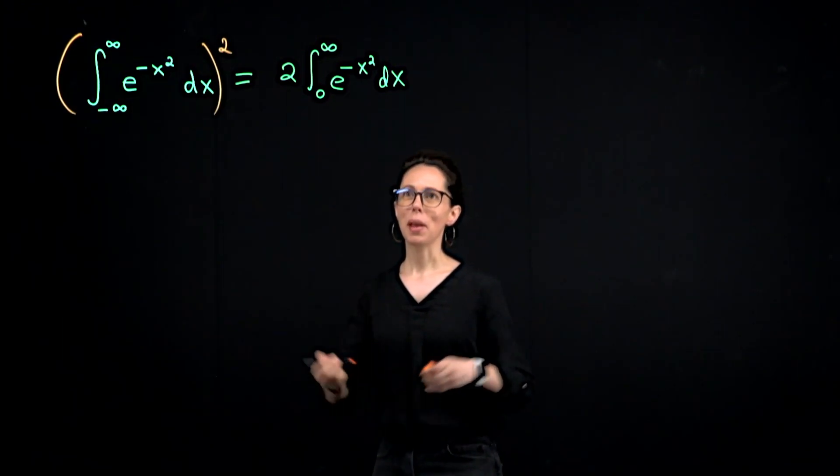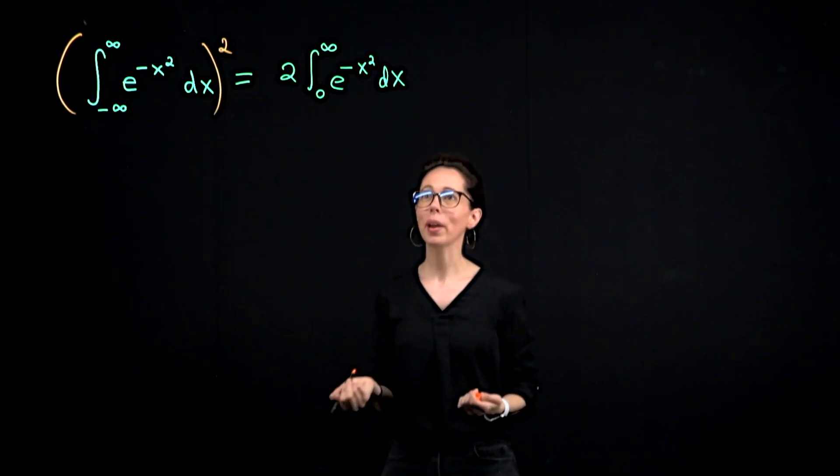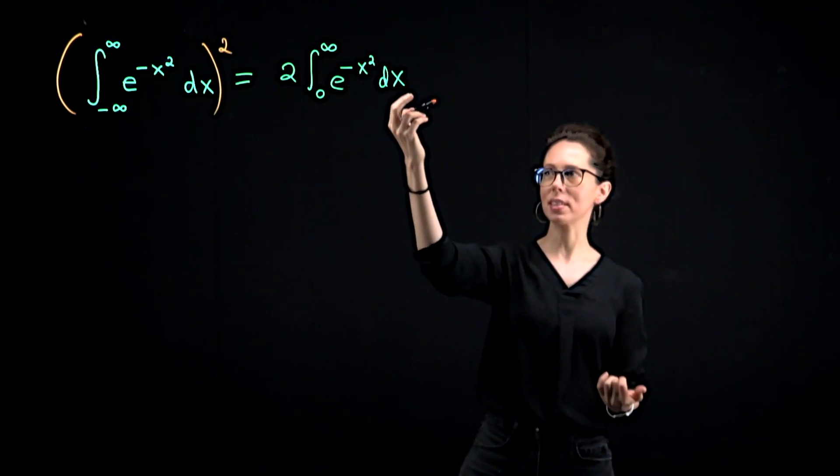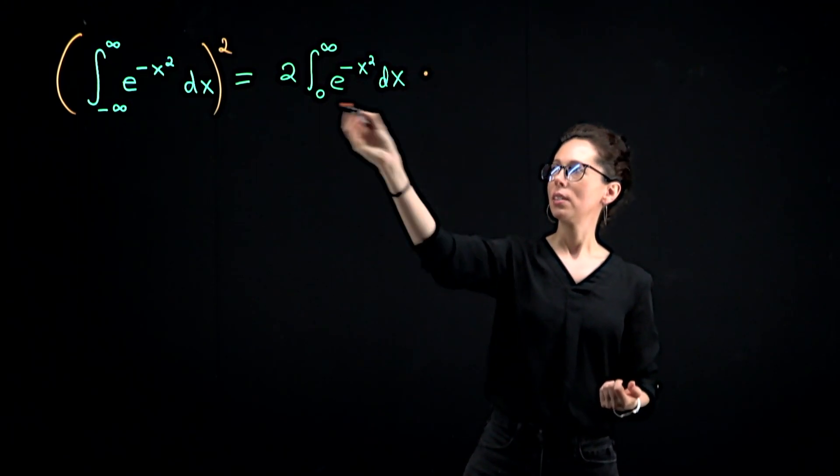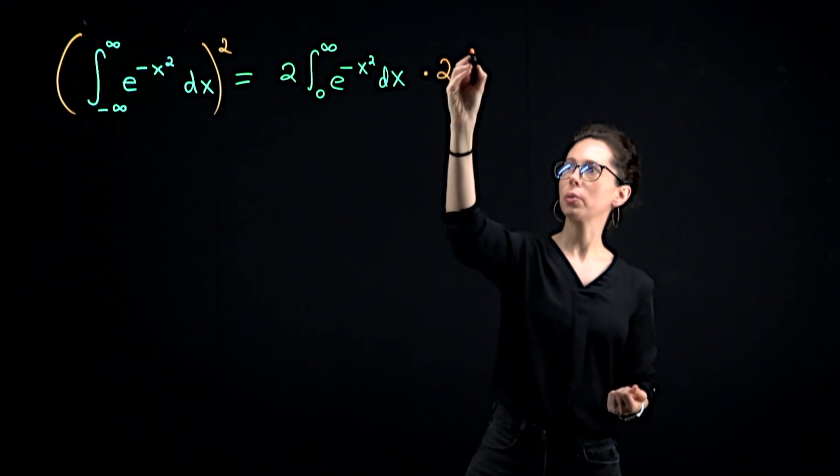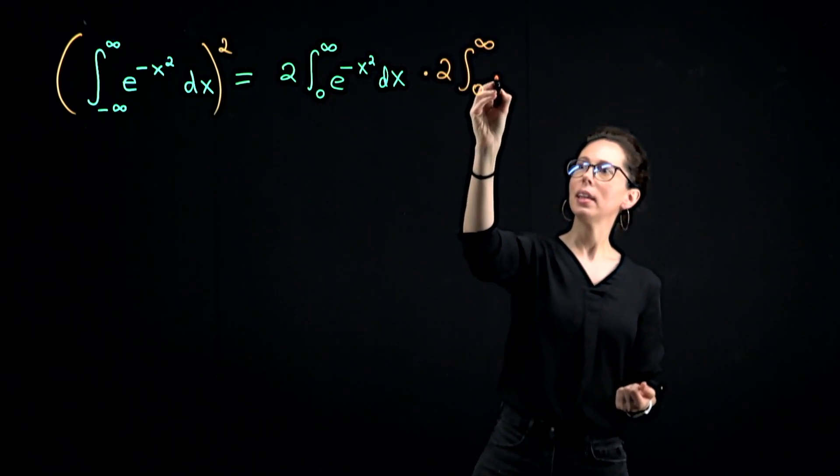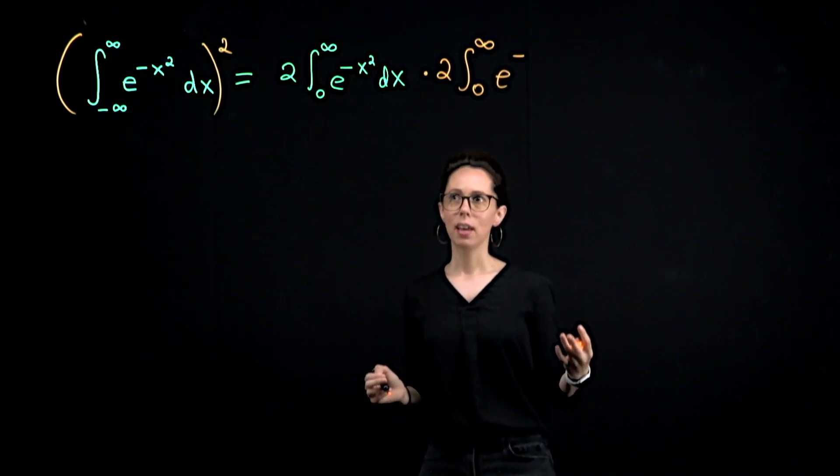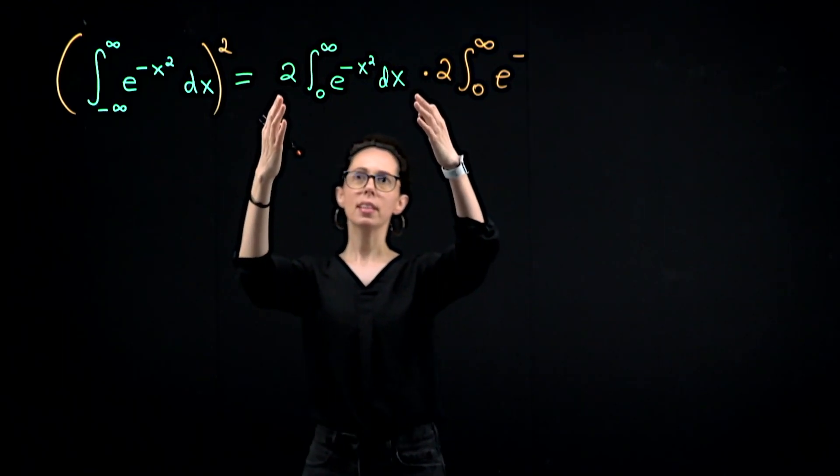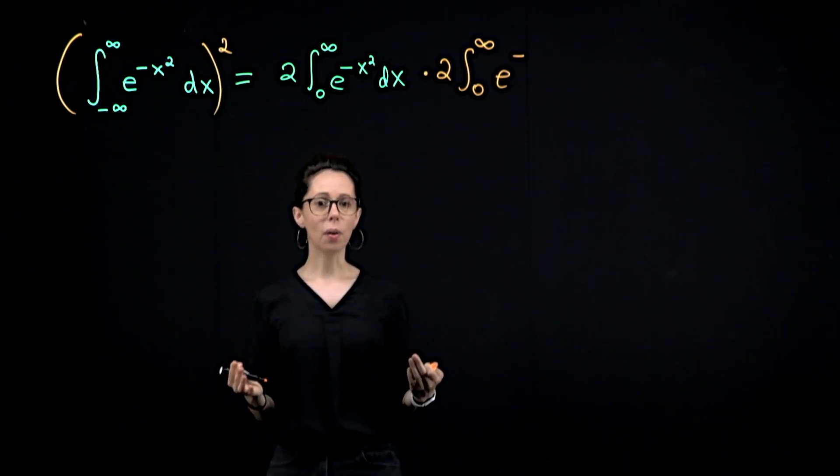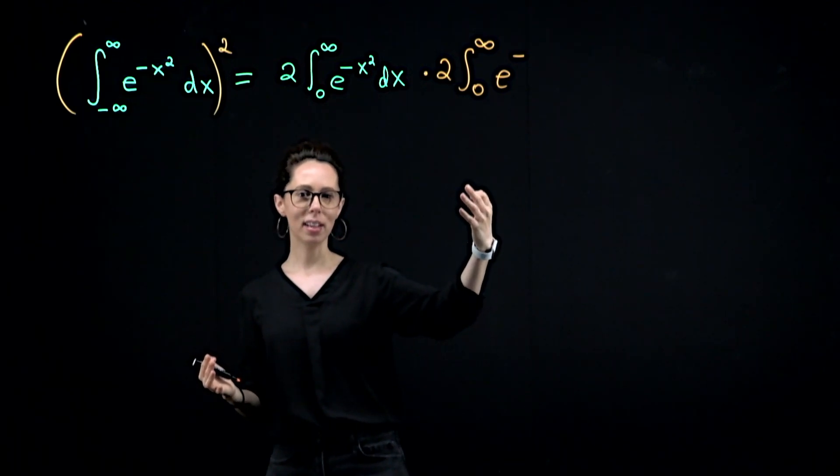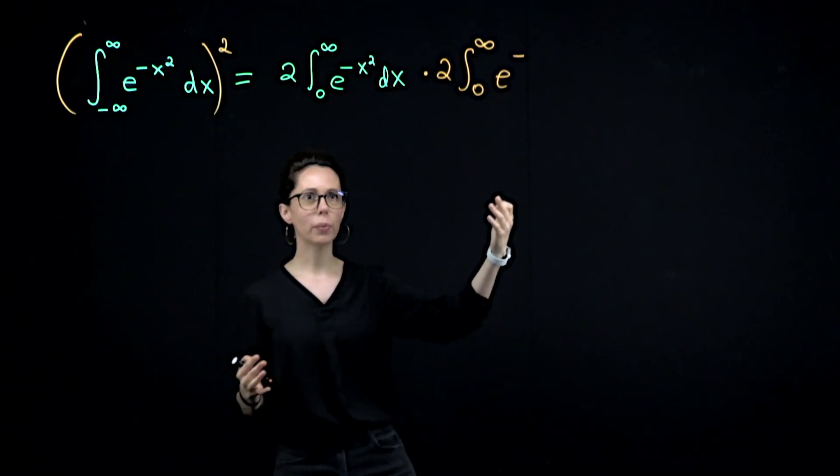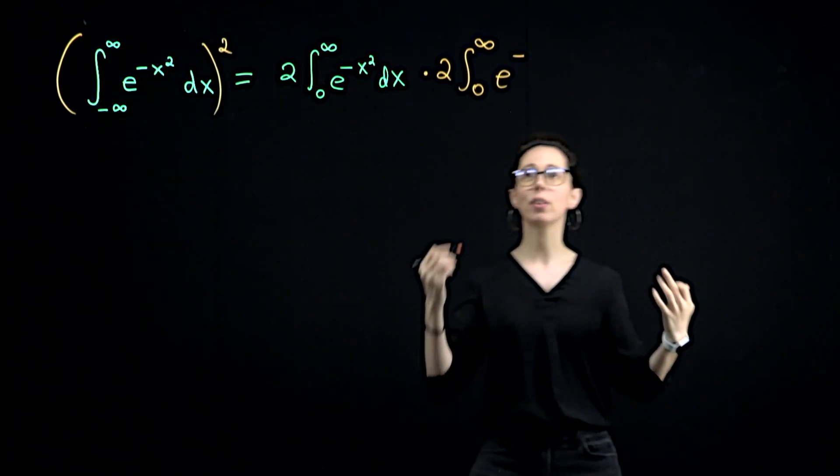And on the right hand side, you might expect me to just write the same thing, parentheses with a square, but that's not what I'm going to do. I'm going to write it's this quantity times a version of itself. So this times two times the integral from zero to infinity e to the negative, I could write negative x squared dx. However, this is not an indefinite integral. So the final answer is going to be a number. It doesn't matter if I call the variable that we're integrating with respect to x or u or as I'm about to write down y.